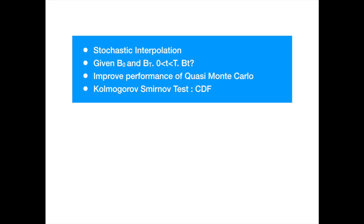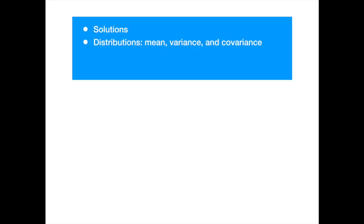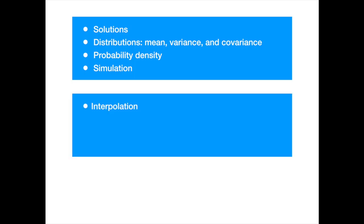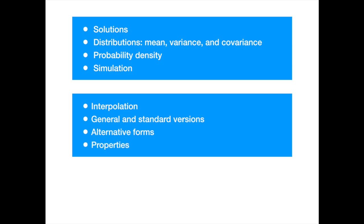As in the previous presentations, we will start with its SDE, solve it, establish its distribution including mean, variance, and covariance, and then show how to simulate its paths. We then cover some concepts that are specific to Brownian bridge: how to interpolate between its two end values, or construct the Brownian bridge; the differences between the general and standard versions; and the at least three different representational forms of the Brownian bridge distribution, which can be confusing, and which are sometimes presented as properties.